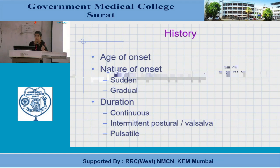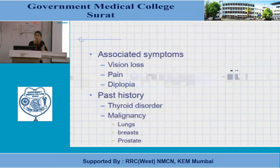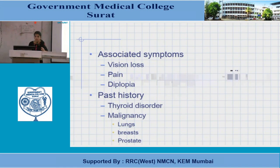Pulsatile proptosis is seen in carotid cavernous fistula. We ask about associated symptoms: vision loss when the optic nerve is involved or due to exposure keratopathy; pain when there are orbital inflammatory disorders like pseudotumor; diplopia when extraocular muscles are involved, as in thyroid orbitopathy. Past history of thyroid disorder and malignancy elsewhere should be sought, as orbit metastasis can occur.